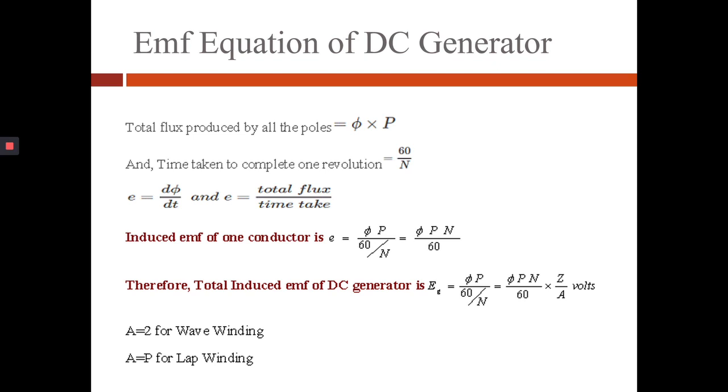As E equals dPhi by dt and E equals total flux divided by time taken, then induced EMF of one conductor is given by E equals PhiP divided by 60 by N, that is PhiPN divided by 60.